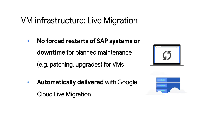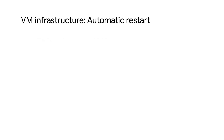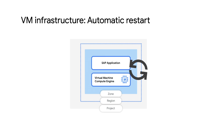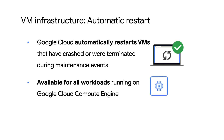Live migration happens without any user interaction and is a feature provided free of charge. The migrated instance is identical to the original instance, including the instance ID, private IP address, and all instance metadata in storage. Another handy feature is automatic restart of virtual machines. If your instance is set to terminate during a maintenance event, or if it crashes because of an unexpected issue, Compute Engine can automatically restart that instance. This setting is on by default on all virtual machine instances, and we recommend you keep it activated.